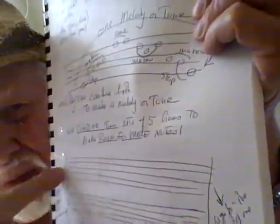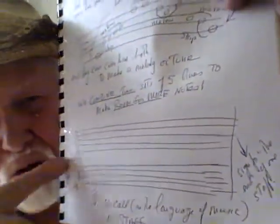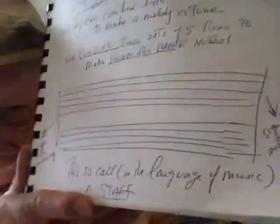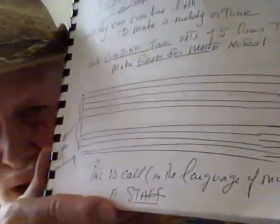See that little thing right on the end? That shows you that those two sets of lines are combined. We call this in the language of music a staff. So that's what a staff is for.